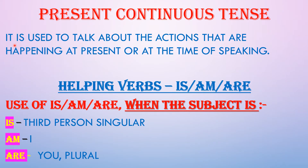Present continuous tense is used to talk about actions that are happening at present or at the time of speaking — that means when we are speaking, the action is going on. The helping verbs in this tense are: is, am and are.